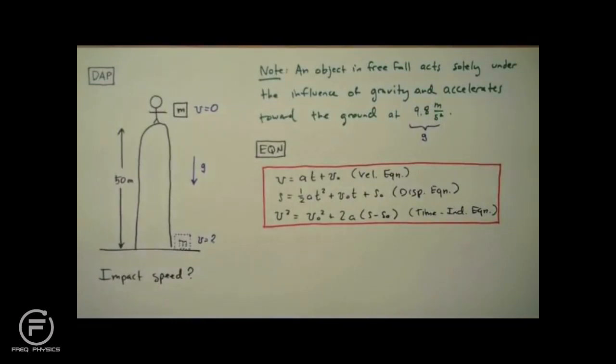So, of these three equations, the most appropriate for our problem is going to be the time independent equation. Because we lack any information about time. So I'm going to rewrite this for the y direction. So we have vy squared is equal to v zero y squared. Plus two ay times y minus y zero.